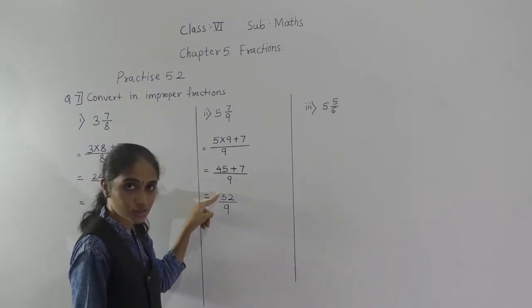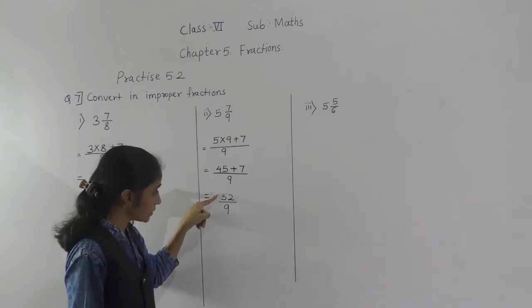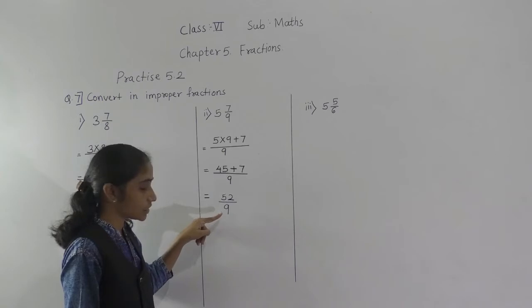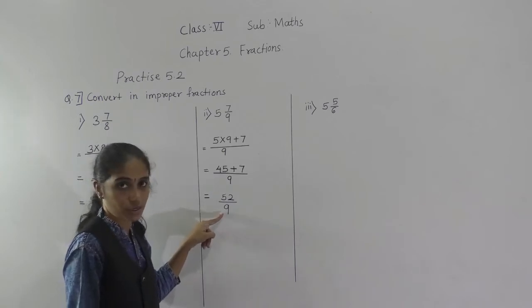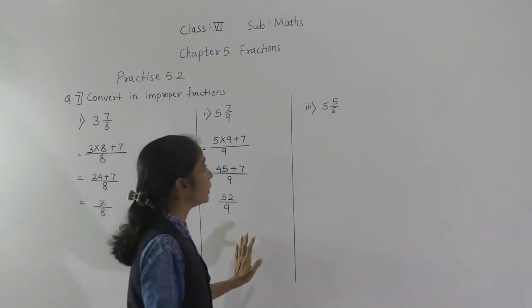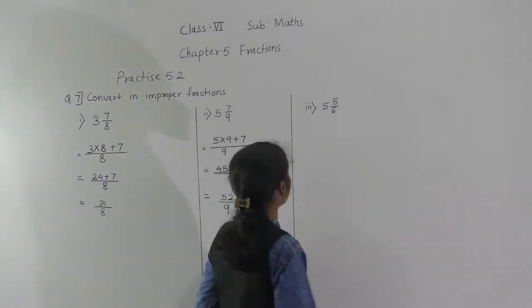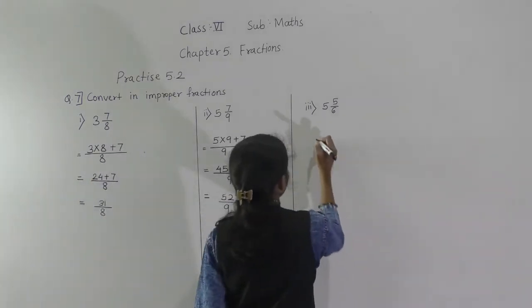45 plus 7 is 52, so we get 52 upon 9, with denominator as it is. 52 upon 9 is an improper fraction because the numerator is greater than the denominator.